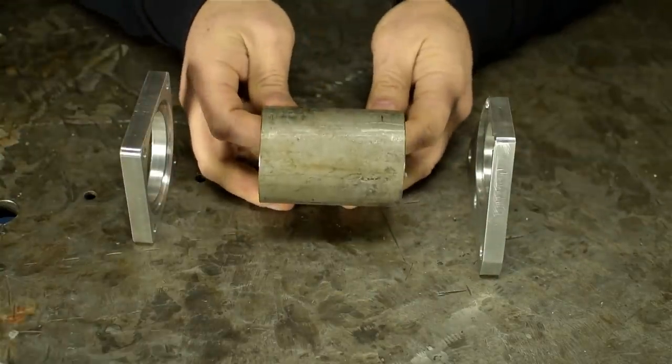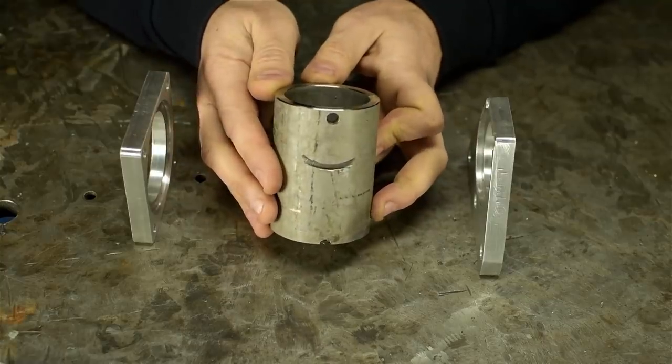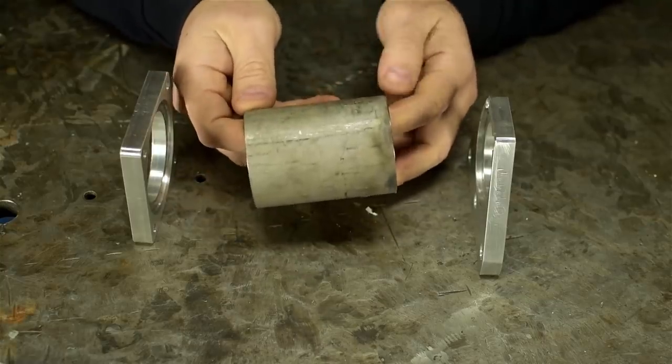Next was the round middle bit. Kind of looks like a minion, doesn't it? Hands down, the easiest of the three parts to make.